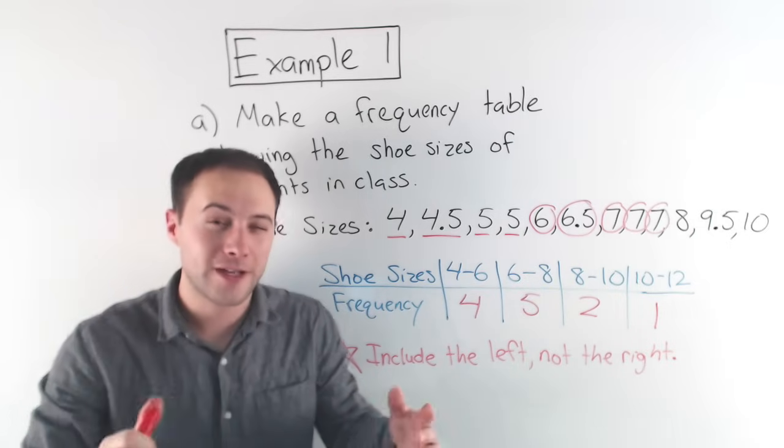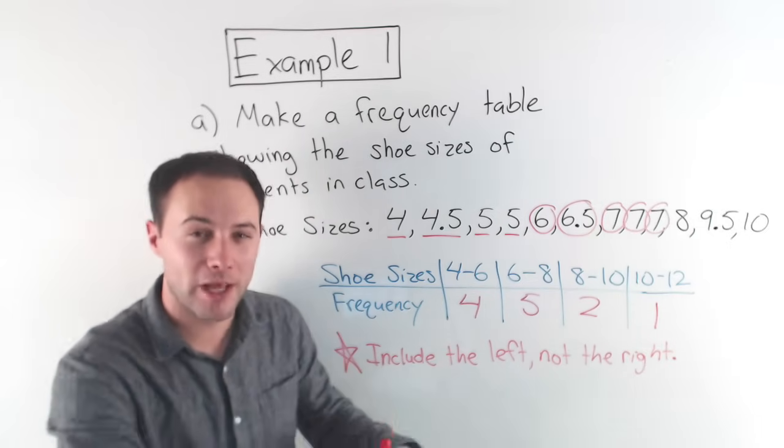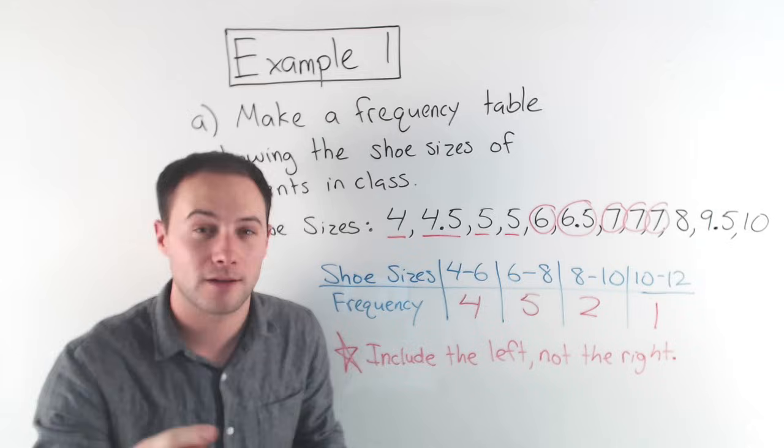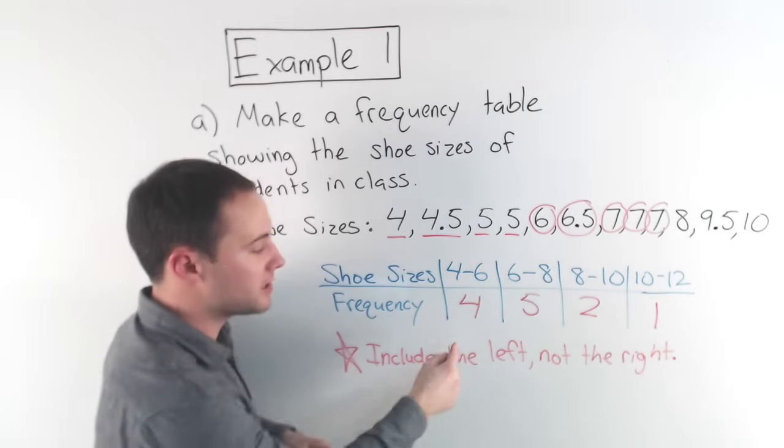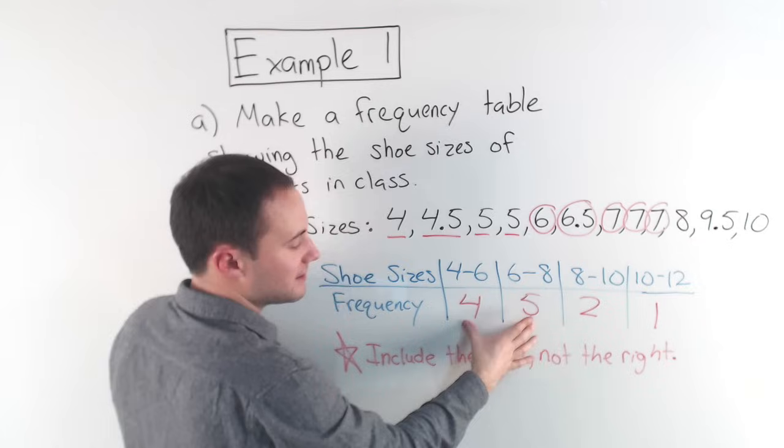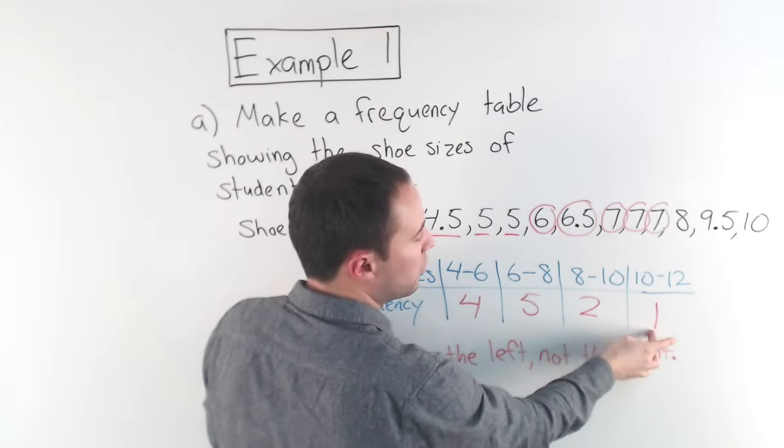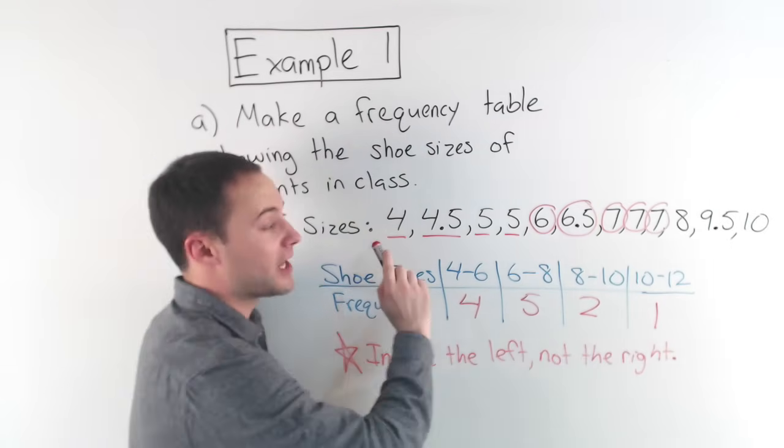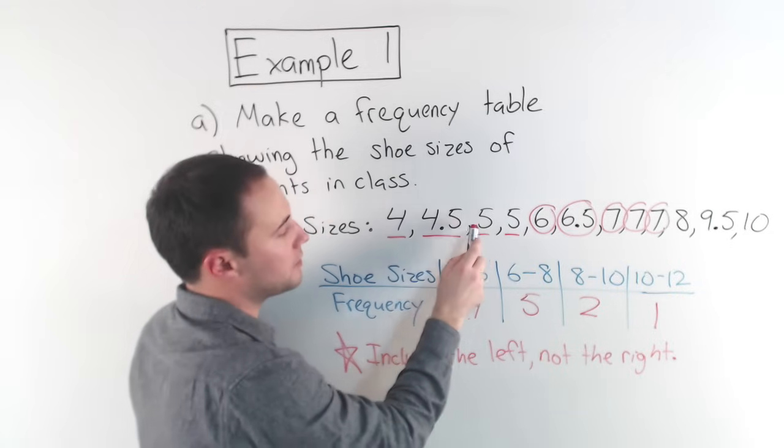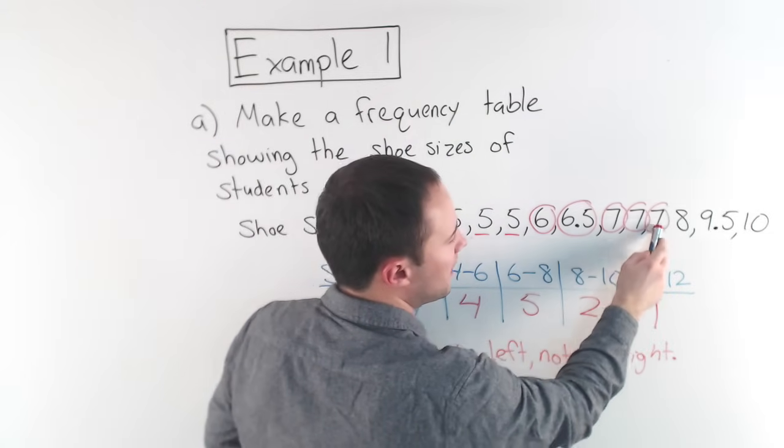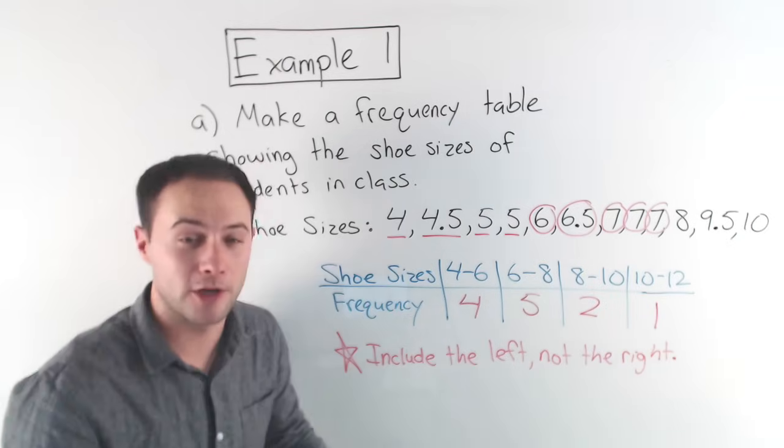Okay. Now always, always, always double check to make sure you didn't miss any or include some numbers twice. And we can do that by just adding. So that's nine, 10, 11, 12, right? So I should have 12 values here. One, two, three, four, five, six, seven, eight, nine, 10, 11, 12. And I'm good.